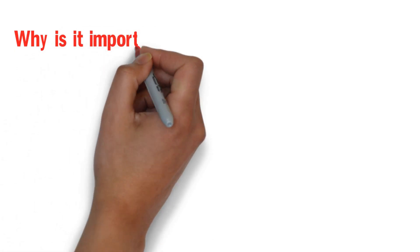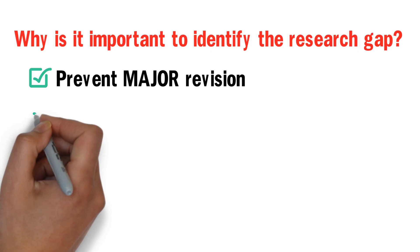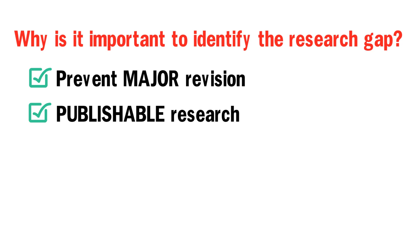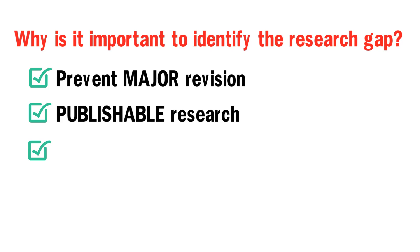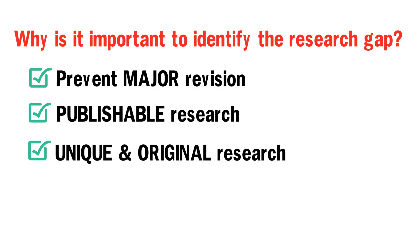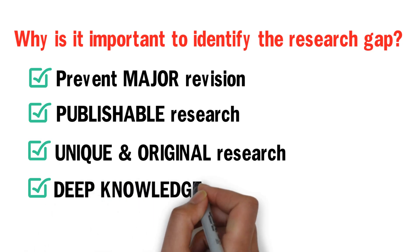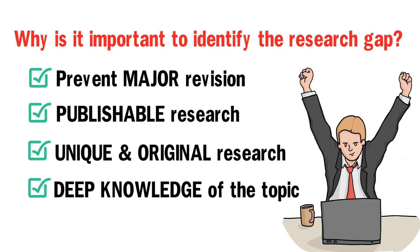As we can see, identifying the research gap and articulating it in the background or rationale of the study is important not only because it will spare the researcher the unnecessary toil of making major revisions, but also because it will make the research publishable. If the researcher clearly identifies the research gap and articulates it in the background of the study, the reviewers or thesis defense panel members will conclude right away that the proposed research project is unique and original because it is not a duplication of what has been done in the past. This will also send a message that the researcher has a deep knowledge of the topic under investigation. Finding original and innovative topics and identifying and articulating the research gap is never an easy feat.